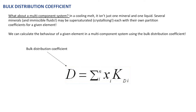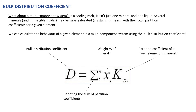Breaking down the formula: D represents our bulk distribution coefficient; sigma denotes the sum of the partition coefficients; X represents the weight percent of mineral i; and KD represents the partition coefficient of a given element in mineral i. So what we're doing is multiplying the amount of mineral by the partition coefficient of an element into that mineral.